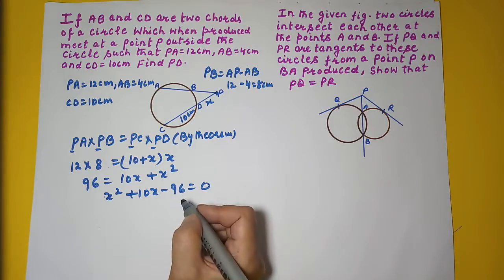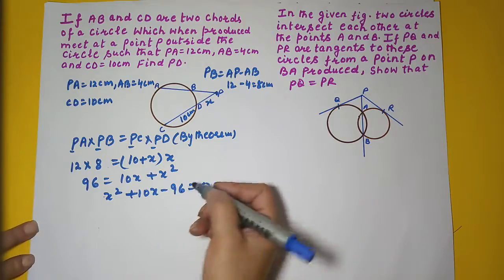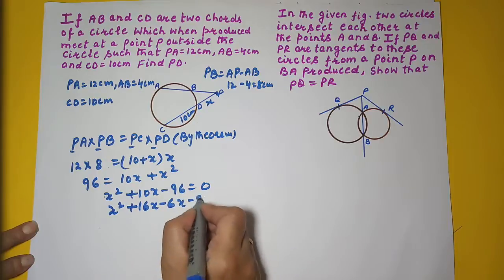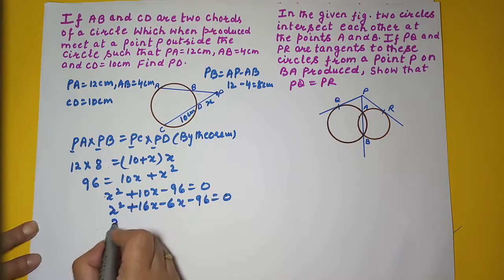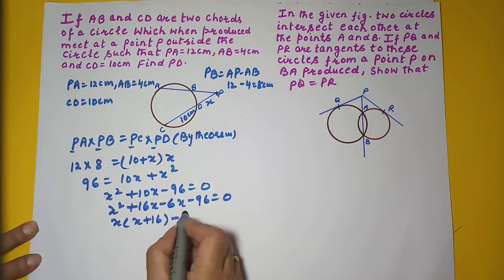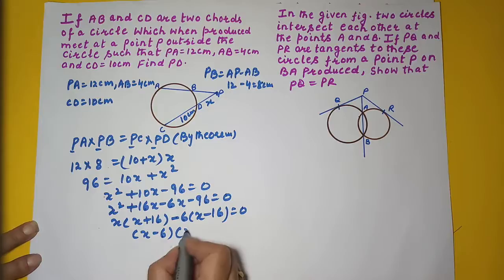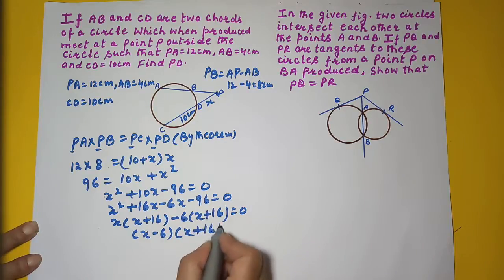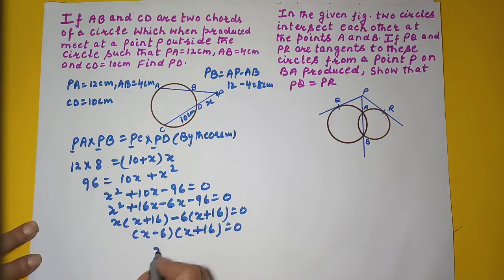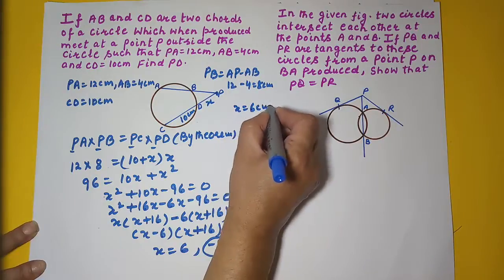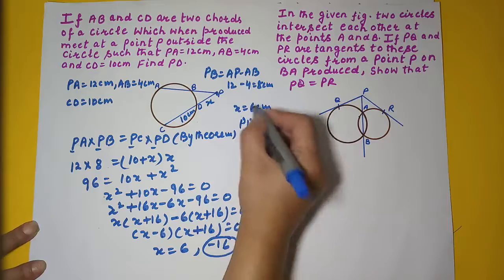Solving the quadratic: X² + 10X − 96 = 0. Splitting the middle term using 16 × 6 = 96 and 16 − 6 = 10: (X + 16)(X − 6) = 0. The two values are X = 6 and X = −16. We reject −16 because length can never be negative. Therefore, PD = X = 6 cm.